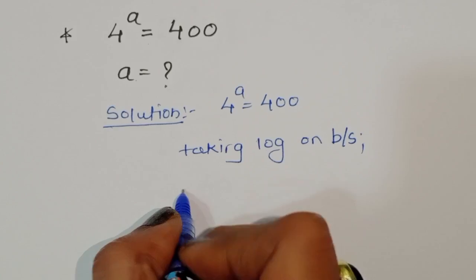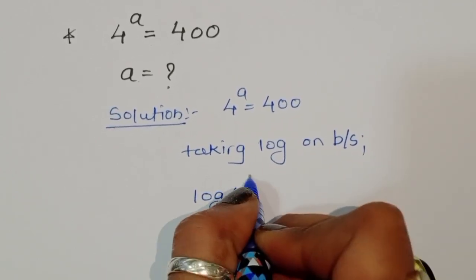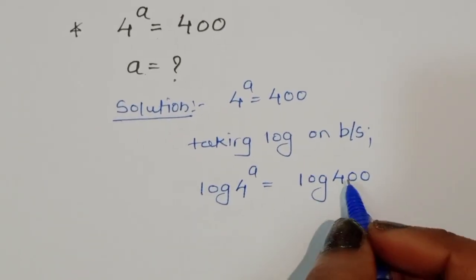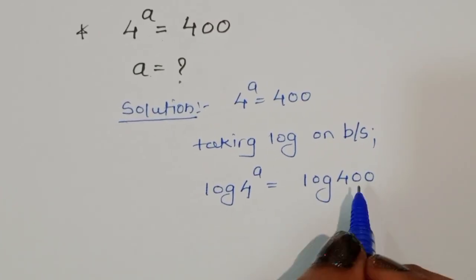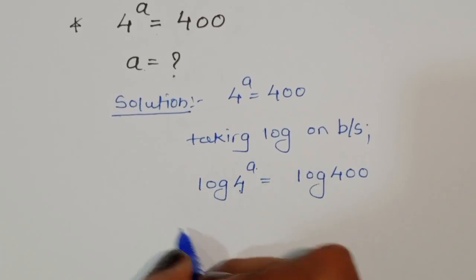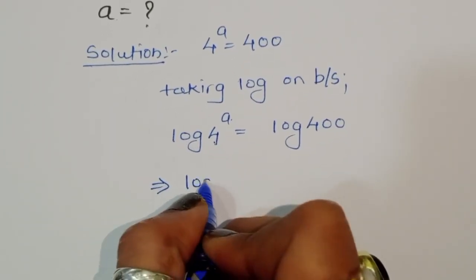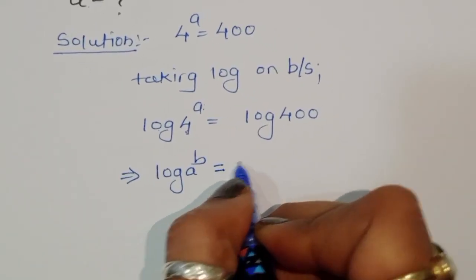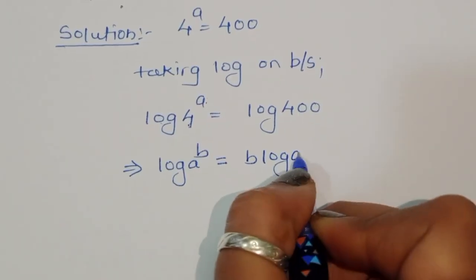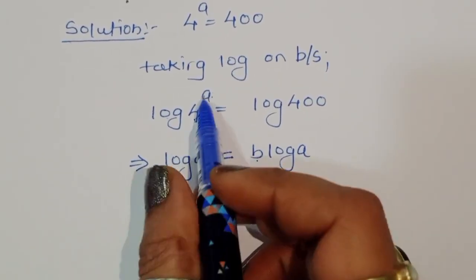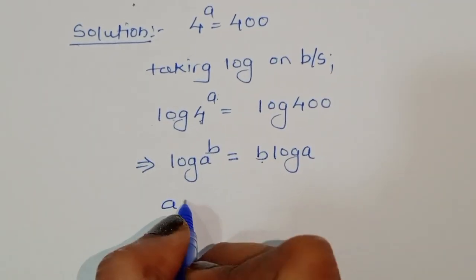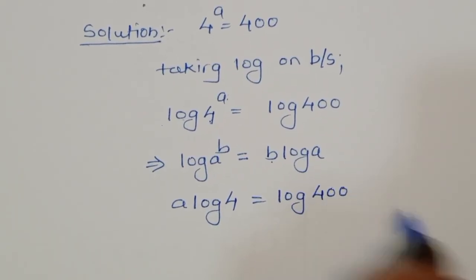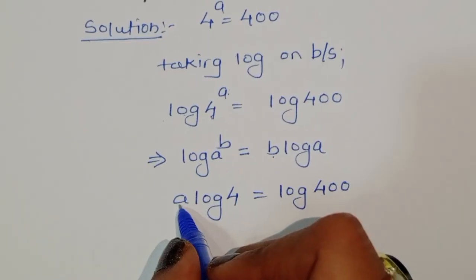We will get log of 4 power a is equal to log of 400. Now this is the form of log of a power b. The formula is: log of a power b equals b times log of a. So according to this formula we can write a log of 4 is equal to log of 400.